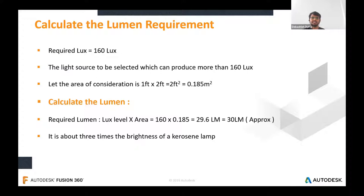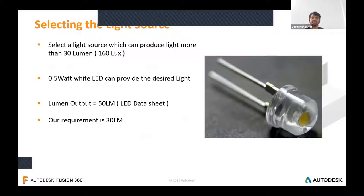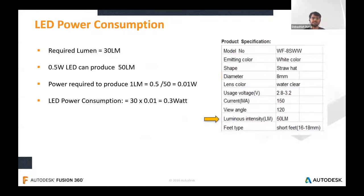In this design I considered a reading lamp, so the reading area is one foot by two feet, which is around 0.1885 square meters. Lumens equals lux level times area, which comes to around 30 lumens. So we need electrical components that produce 30 lumens. By searching the market, I selected an 8mm 0.5W white LED. From the datasheet, this LED produces 50 lumens, and our requirement is 30 lumens, so this LED is perfect. As per the datasheet, 50 lumens equals 0.5W, and the calculated LED power consumption is around 0.3W.